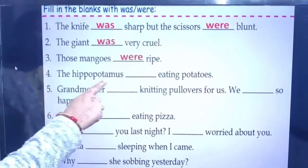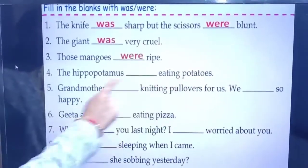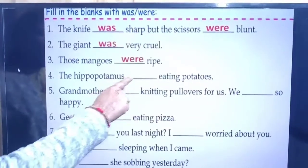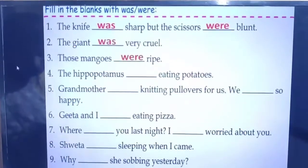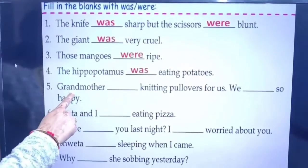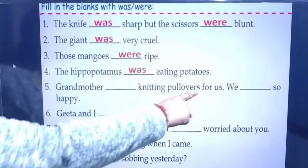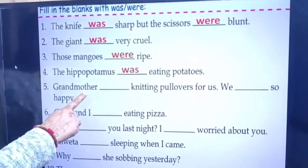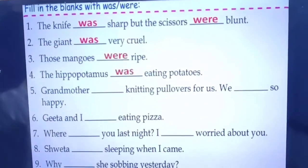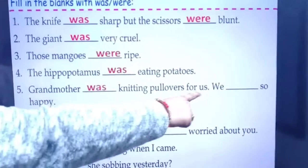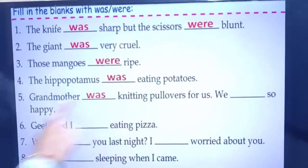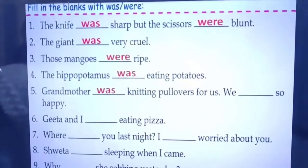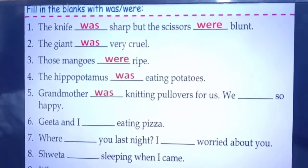Next: 'The hippopotamus ___ eating potatoes.' The subject hippopotamus is singular, so we write: the hippopotamus was eating potatoes. Next: 'Grandmother ___ knitting pullovers for us.' Grandmother is singular, so: grandmother was knitting pullovers for us. Next: 'We ___ so happy.' We is a plural pronoun, so: we were so happy.